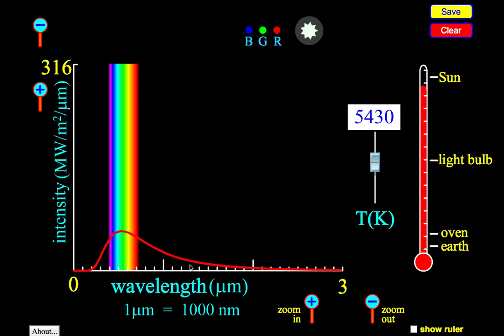Now, Wien's law is a relationship that establishes the temperature versus the wavelength of the greatest intensity of the radiation coming off that particular body.